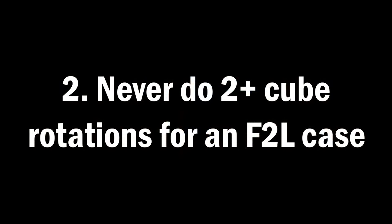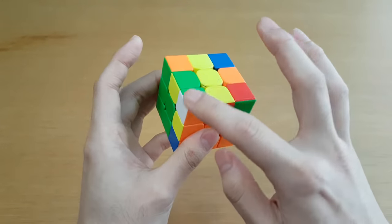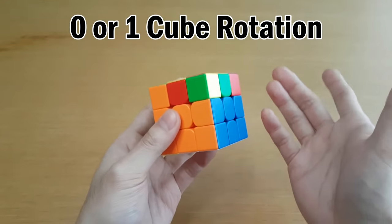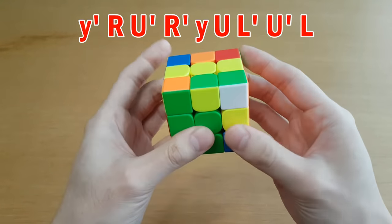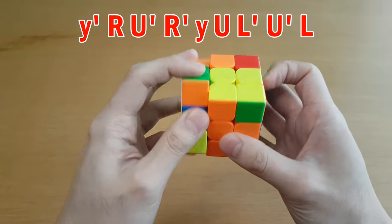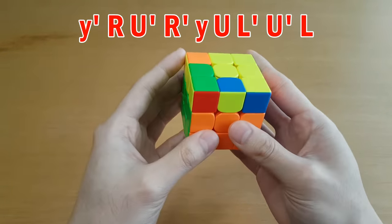Number two, never do two cube rotations for an F2L case. The fastest way to solve any F2L case always takes zero or one cube rotation. If you're solving a pair and it takes you two cube rotations, then you are not doing it the fastest way.